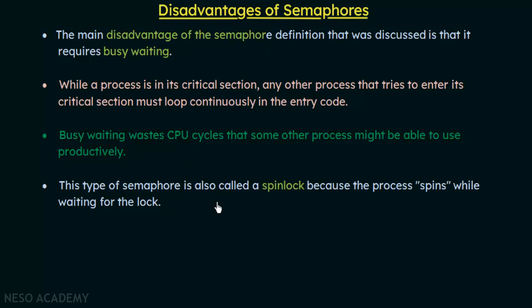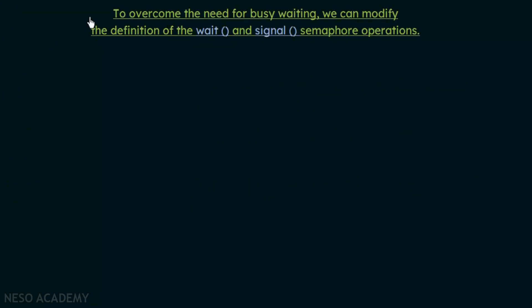This is the main disadvantage of semaphores — busy waiting. Can we address this problem where CPU cycles are wasted? One way is to modify the definition of the wait and signal semaphore operations. By making slight modifications to these wait and signal operations, we could get rid of busy waiting. Let's see how we can modify them to overcome the need for busy waiting.